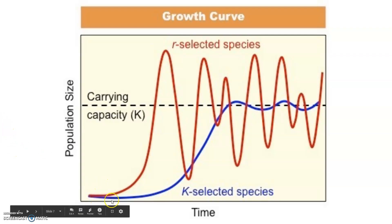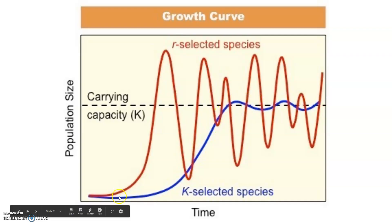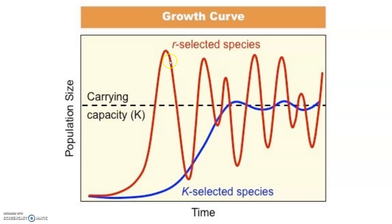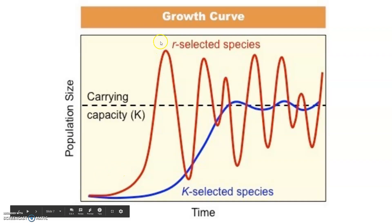K-selected species is determined by the carrying capacity. They grow exponentially until they hit a point where that habitat can't sustain them anymore, whereas R-selected species are more dominated by their growth rate. So they tend to grow really, really quickly, and then they overshoot their carrying capacity and then die really quickly.